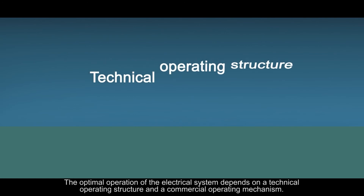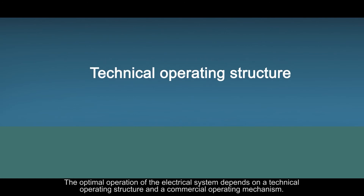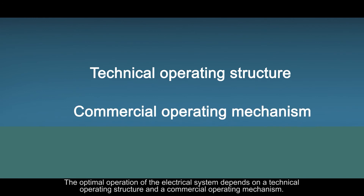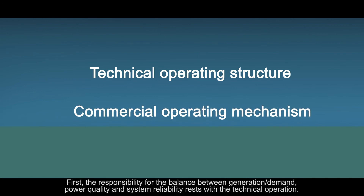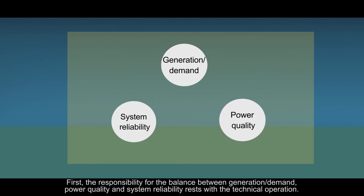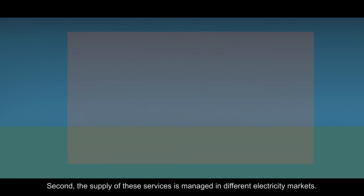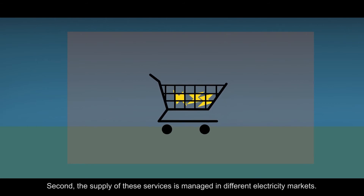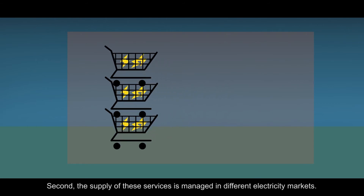The optimal operation of the electrical system depends on a technical operating structure and a commercial operating mechanism. First, the responsibility for the balance between generation and demand, power quality and system reliability rests with the technical operation. Second, the supply of these services is managed in different electricity markets.